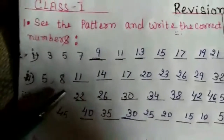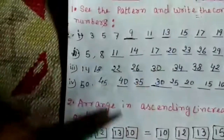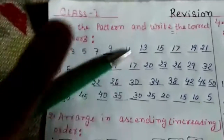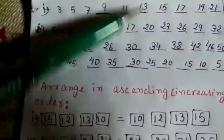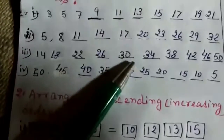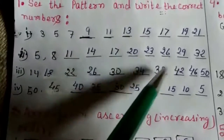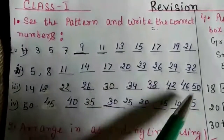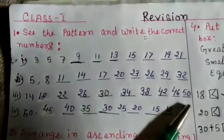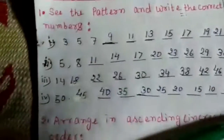Continuing: in 18 we add 4 to get 22. In 22 we add 4 to get 26. In 26 we add 4 to get 30. In 30 we add 4 to get 34. In 34 we add 4 to get 38. In 38 we add 4 to get 42. In 42 we add 4 to get 46. In 46 we add 4 to get 50.